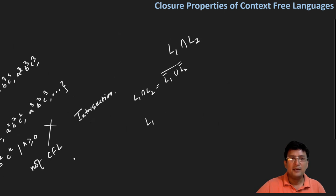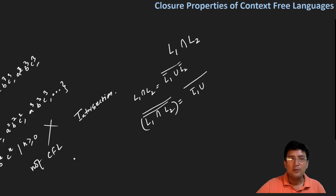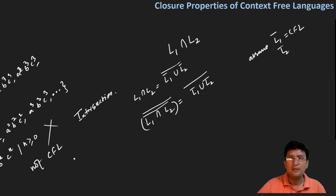How did we derive this? If we take L1 intersection L2 and complement it twice, we get the same language. Applying De Morgan's law once: the complement of (L1 intersection L2) equals L1 complement union L2 complement. Now, let us assume that complementation is closed for context-free languages — that is, context-free languages are closed under complementation. If so, then L1 complement is a context-free language, and L2 complement is also a context-free language.